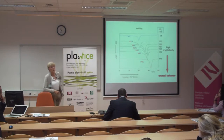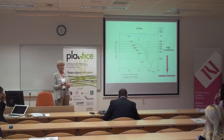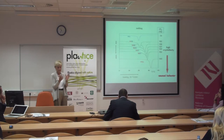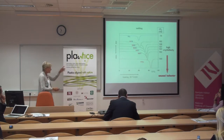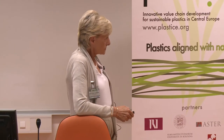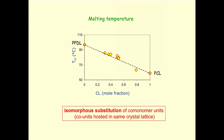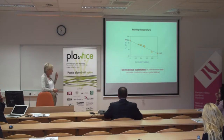This is a very unusual behavior. In polymer science, when you add randomly foreign units into a homopolymer chain you introduce structural disorder, and around 50–50 composition you lose the ability to crystallize. Instead, here we have high crystallinity over the entire composition range. Plotting the melting temperature, it decreases smoothly from that of poly(pentadecalactone) homopolymer to polycaprolactone — the typical behavior of isomorphous substitution, where the two monomer units enter the same crystal lattice.